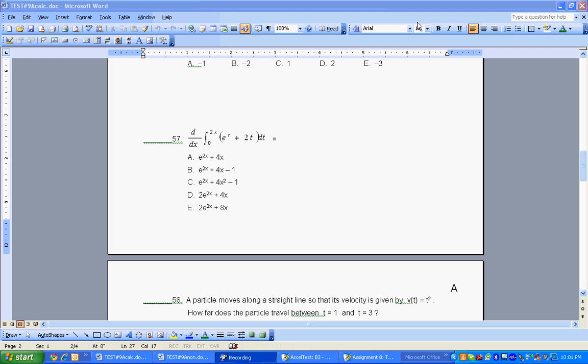Alright, we're gonna look at number 57 on test number 9, the calculator version. If you look at it, we're taking a derivative of something that we were integrating from, and this is a definite integral, so we have limits of integration going on here. So we're taking a derivative of something that we're integrating.